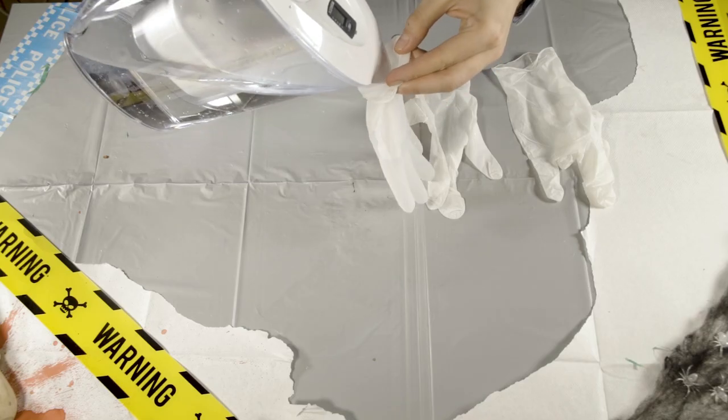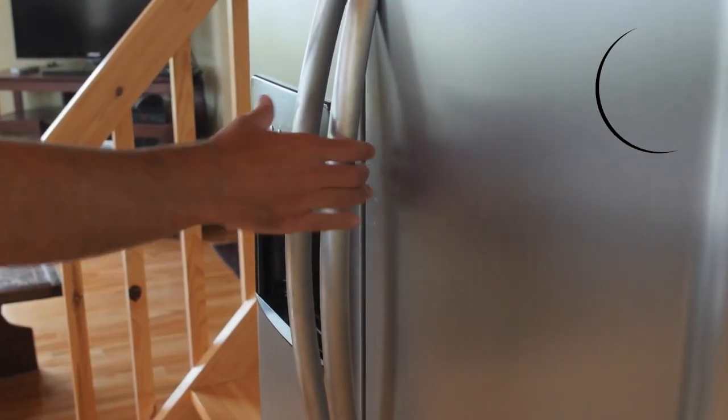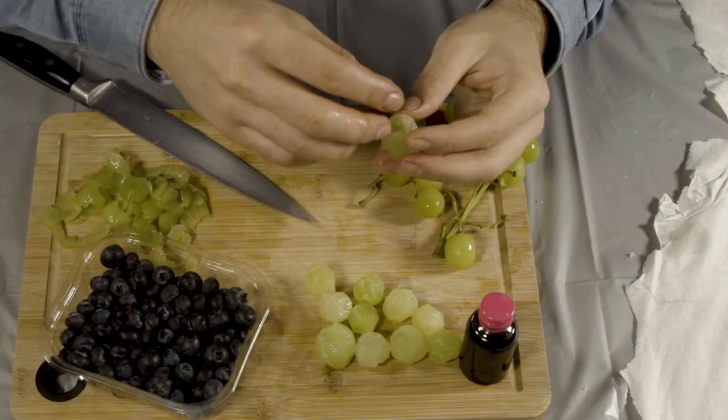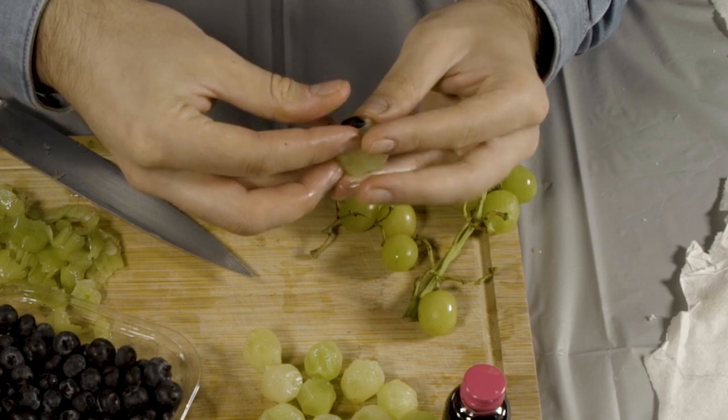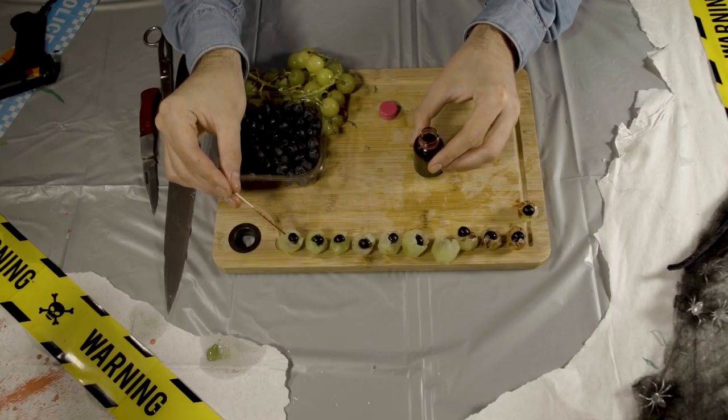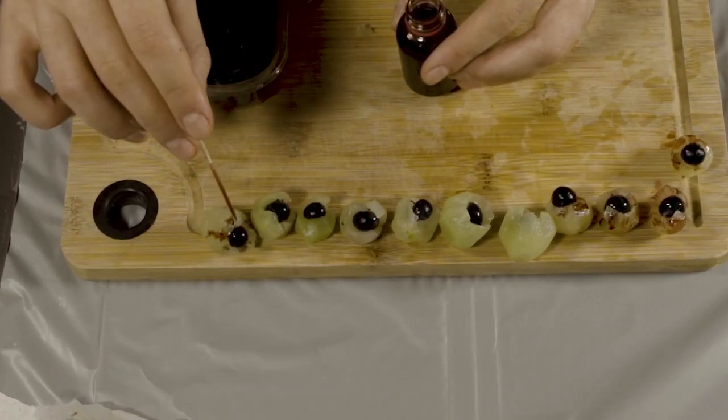First, fill the gloves with water, tie them at the ends and then pop them in the freezer overnight until they're completely solid. To make those petrified eyeballs, just place a single blueberry at the center of each lychee, or peeled white grape, and then use a cocktail stick dipped in red food dye to add some gruesome vein detail.